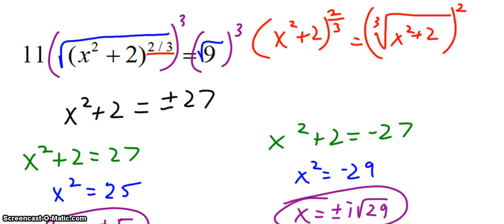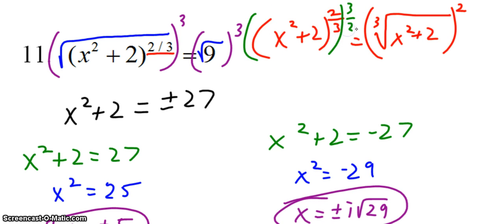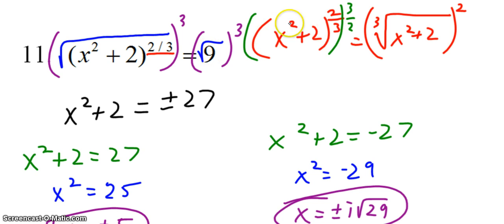Another way to think about the first step: to get rid of an exponent of two-thirds, you can raise both sides to the three-halves, because two-thirds times three-halves equals one. Then you raise the other side to the three-halves as well, which is the same as what we did — cubing it and taking the square root. This is not a different technique, just a different way to think about it.